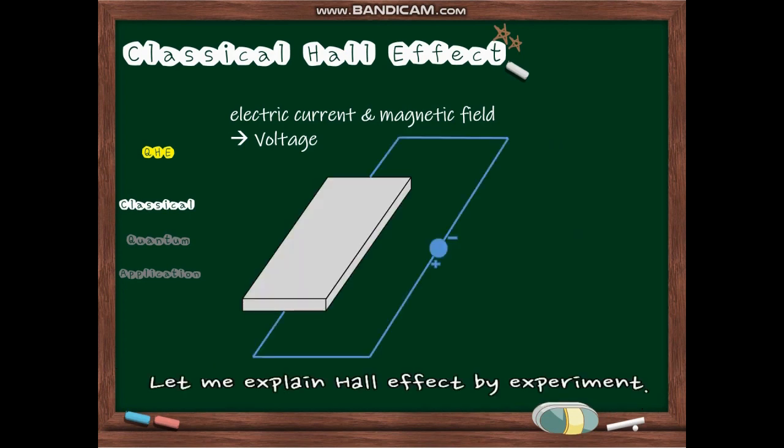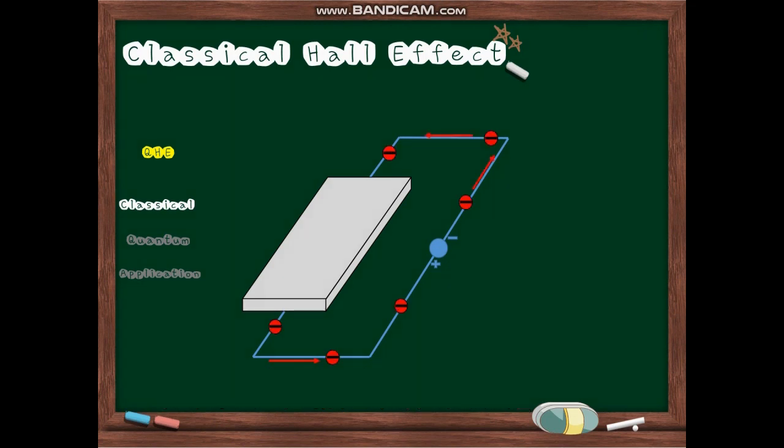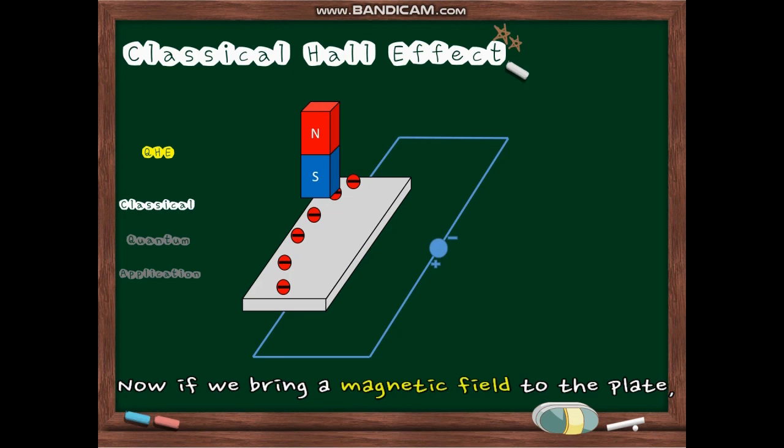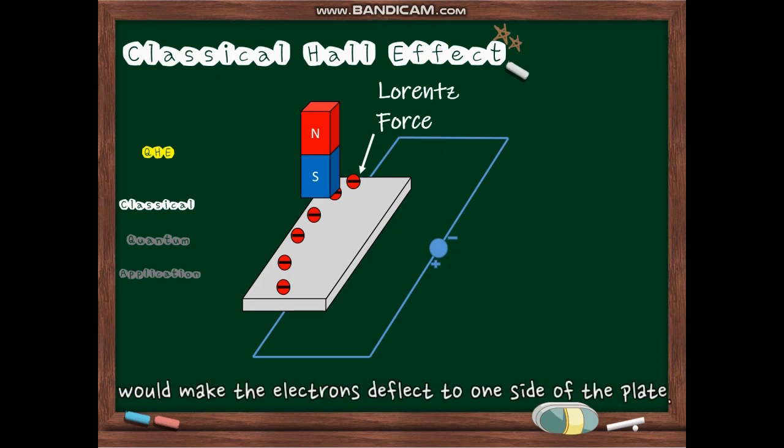Let me explain Hall effect by experiment. We have a thin conductive plate and we set current flow to it. Now, if we bring a magnetic field to the plate, the Lorentz force which disturbs flow of carriers would make the electrons deflect to one side of the plate.